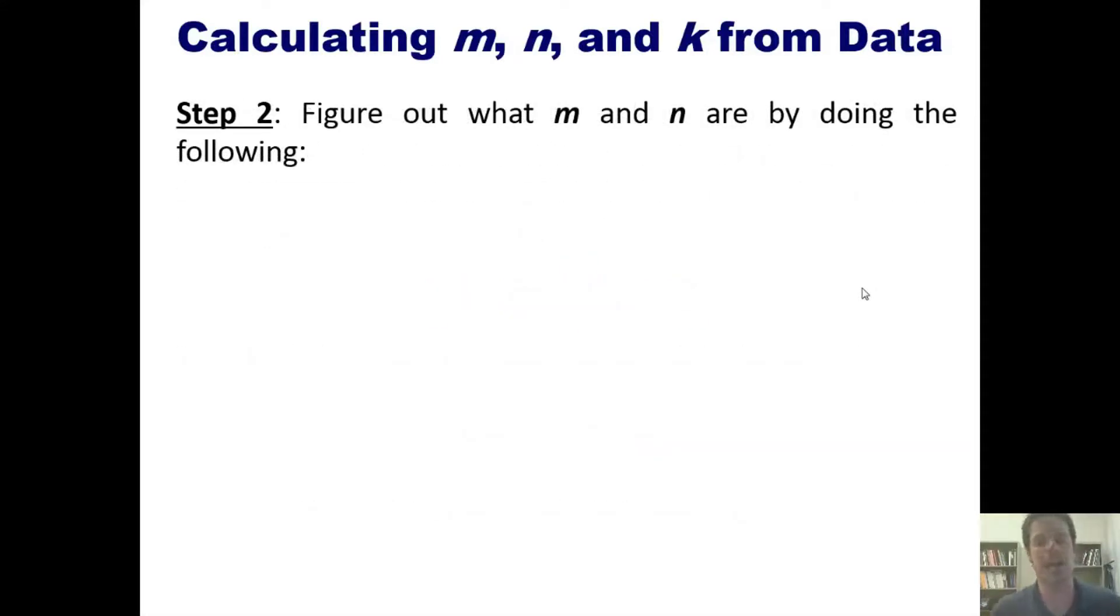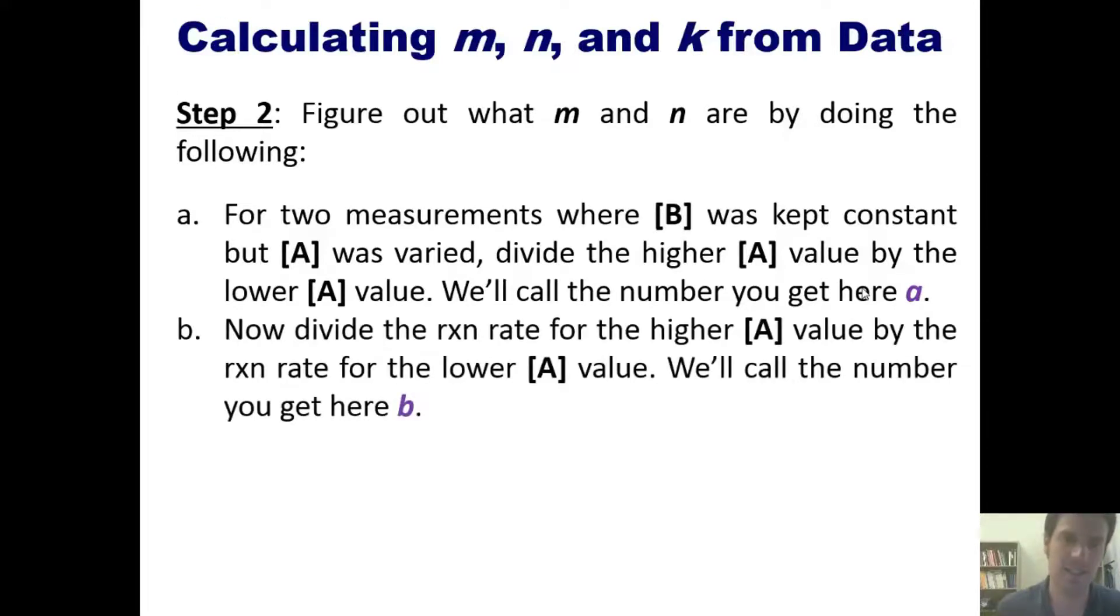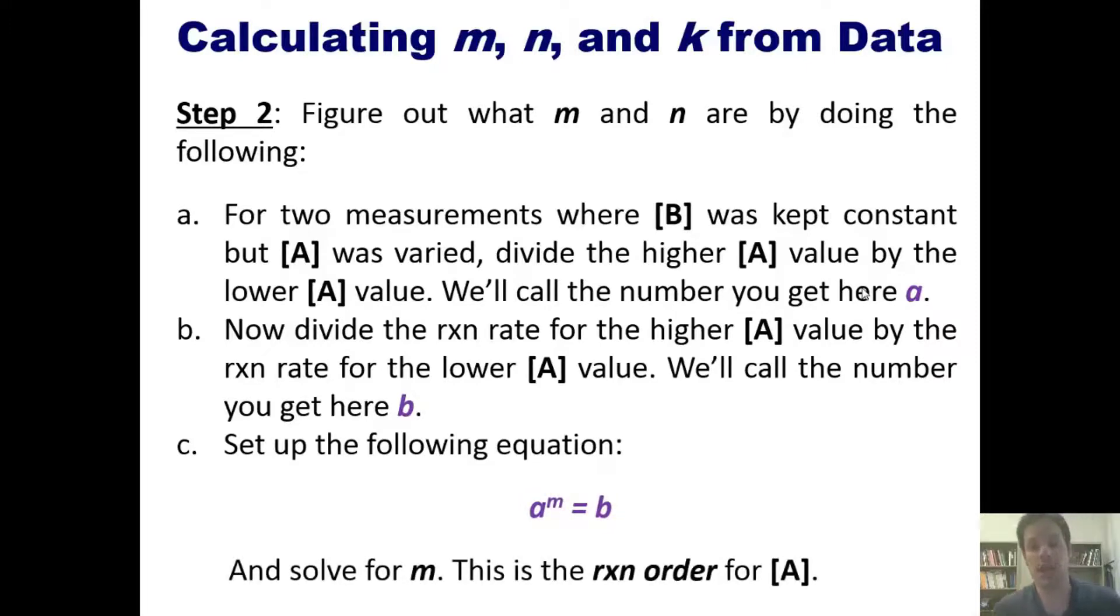Step two: figure out what M and N are by doing the following. First, for two measurements where the concentration of B is kept the same but A is varied, divide the higher A value by the lower A value. We'll call the number you get here Purple A. Now divide the reaction rate for higher concentration of A value by the reaction rate for the lower concentration of A value. We'll call the number you get here Purple B. Then set up the following equation: A raised to the M equals B, and then solve for M. This is the reaction order for A. Okay, I realize these steps look really baffling. Please bear with me. After we get through these, I'll do an example and you will see how to actually make this happen.